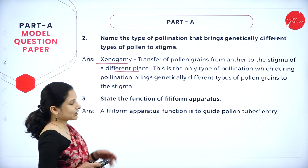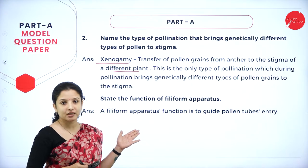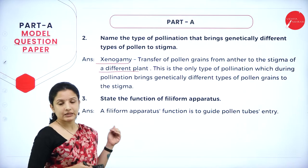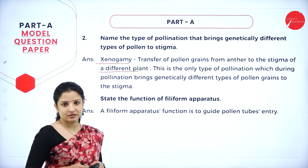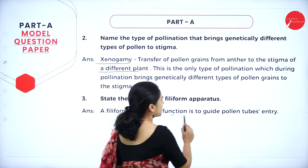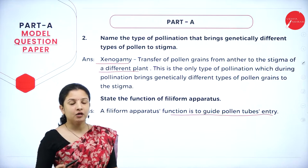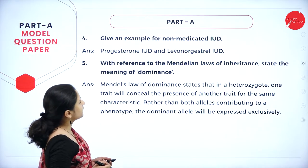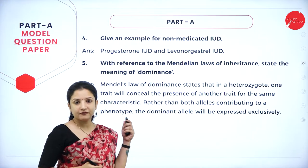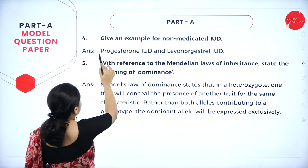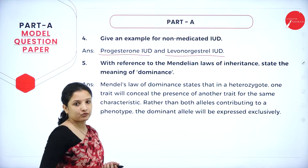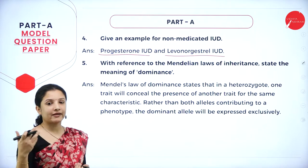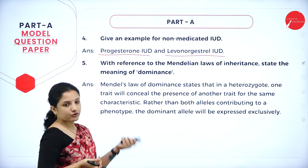Question 3: the function of the filiform apparatus — present in the synergid region of the ovule as a finger-like projection — is to guide the pollen tube's entry. Just write that function; no need to describe the apparatus further. Question 4: give an example of a non-medicated IUD. The answers are progesterone IUD or levonorgestrel IUD — these secrete hormones inside the female reproductive system. Write any one example.